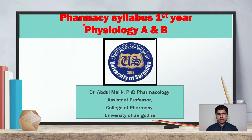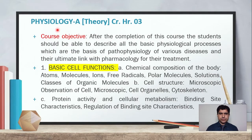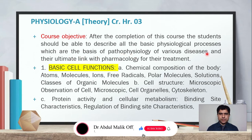Today I am going to discuss about the Pharmacy syllabus first year, including Physiology A and B. As this course is taught in two semesters, Physiology A and B will be discussed here. The course objective of Physiology A is that after completion, the student should be able to describe all the basic physiological processes which are the basis of pathophysiology of various diseases and their ultimate link with pharmacology for treatment.